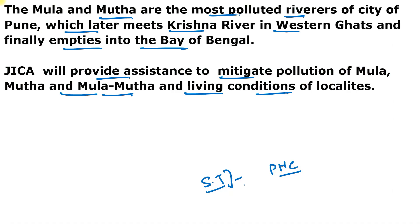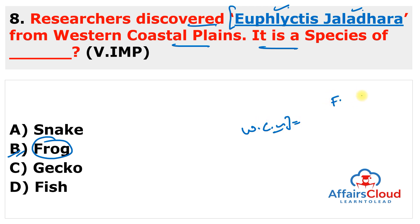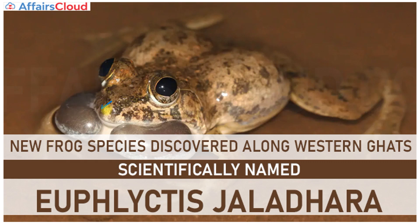Researchers discovered Euphlyctus jaldapara from the western coastal plains — it is a species of frog, answer B. This frog species was discovered from freshwater bodies of the western coastal plains of India. It was first spotted near the Thattekad Bird Sanctuary in Ernakulam district, Kerala, in 2017. Later, multiple populations were identified all along the western coastal plain from Kerala to Gujarat.